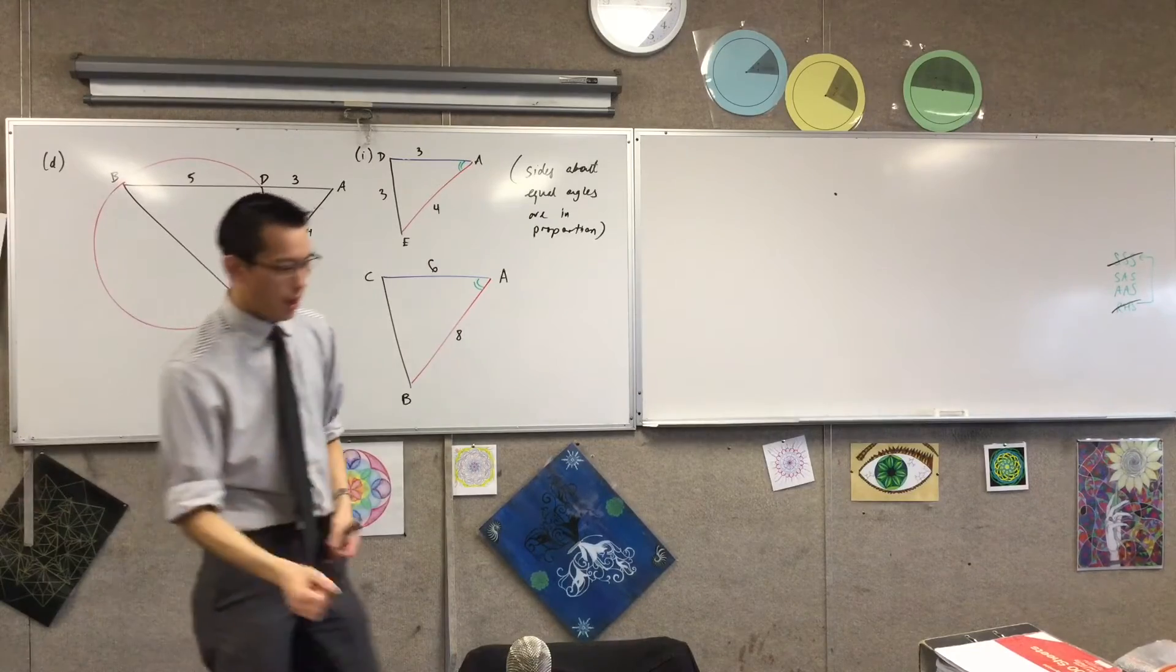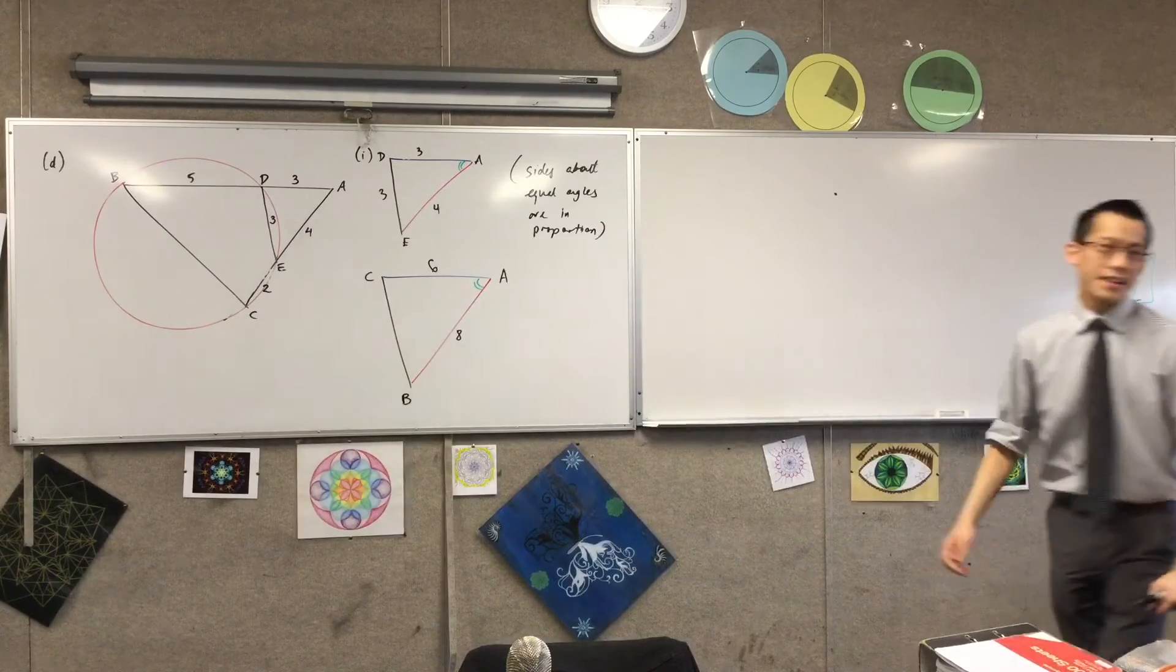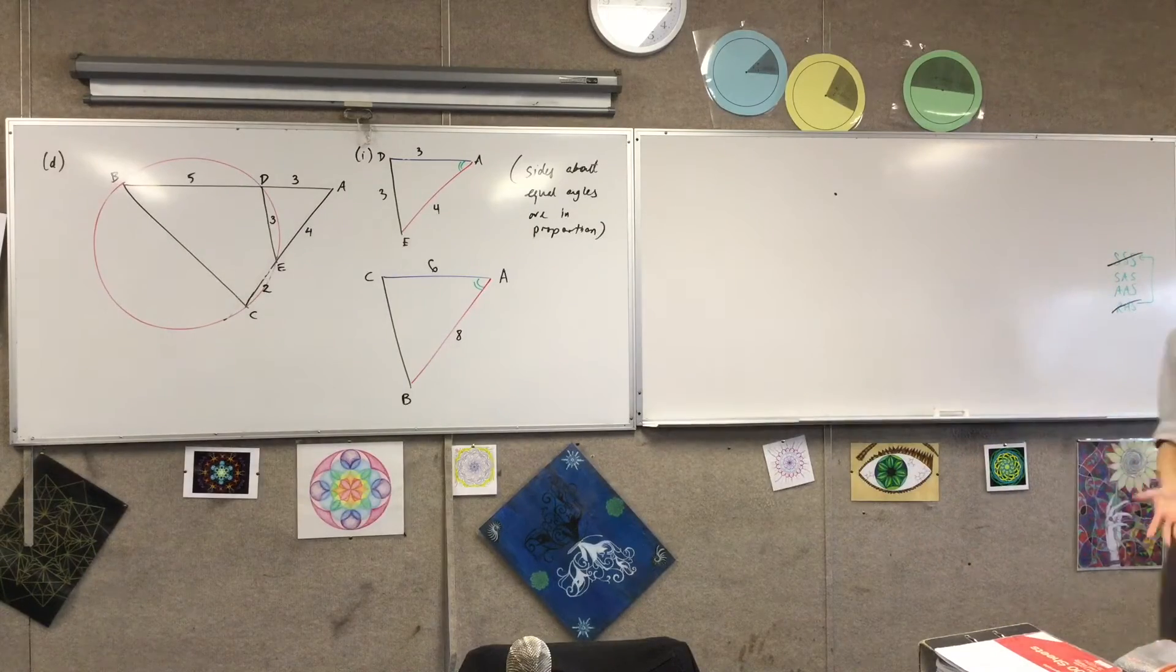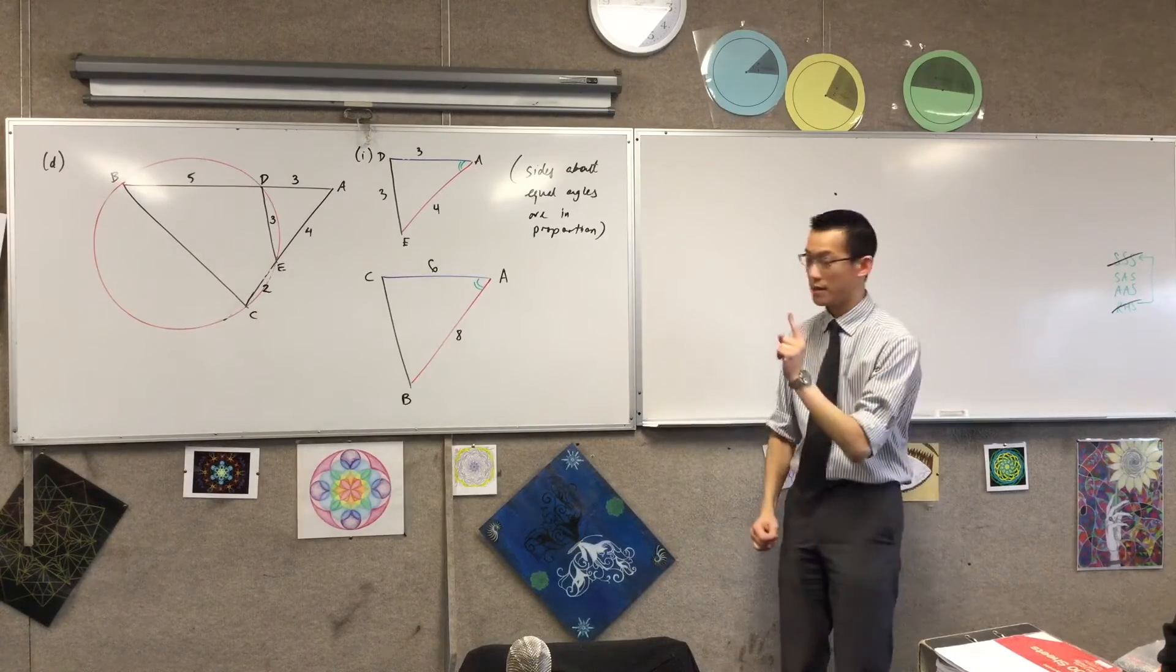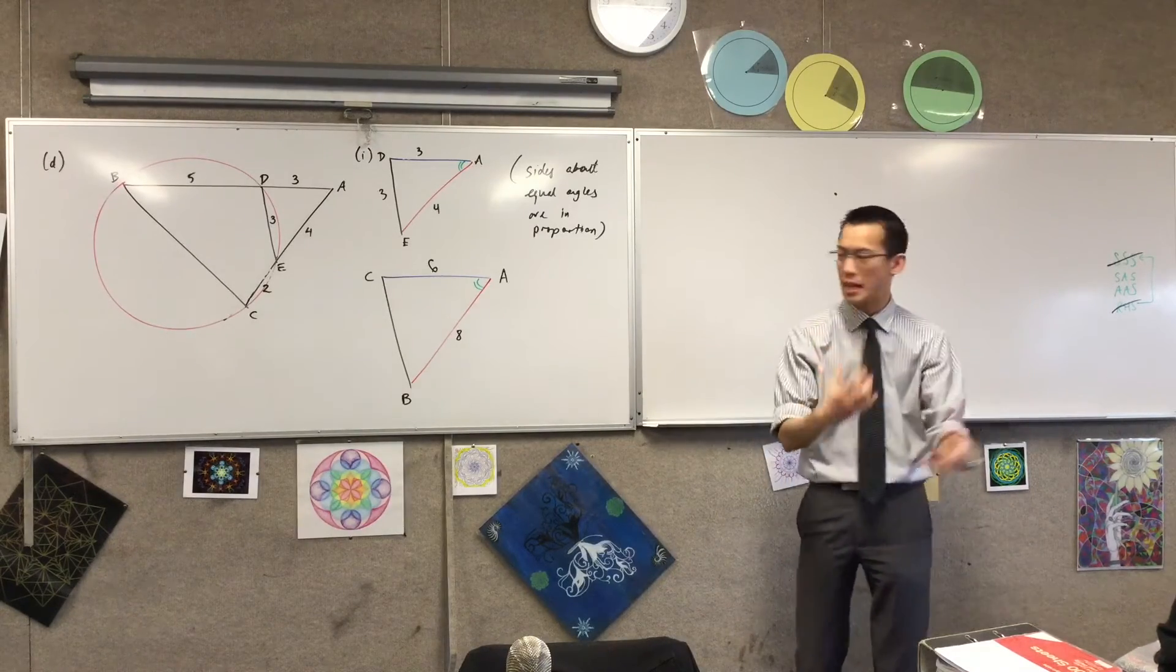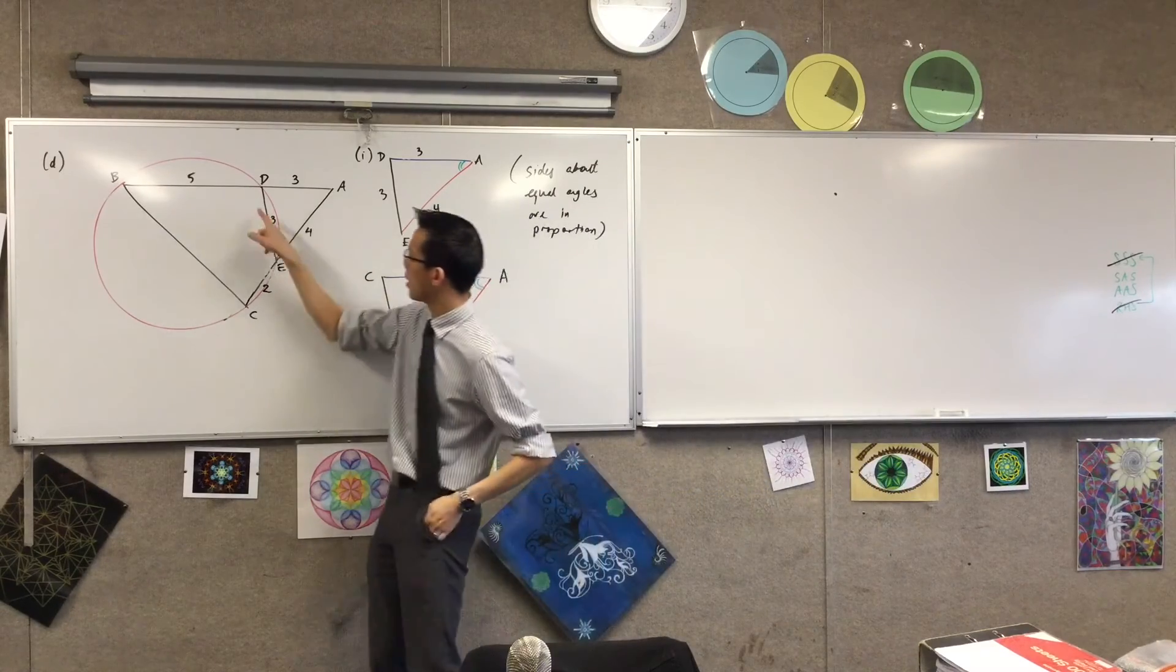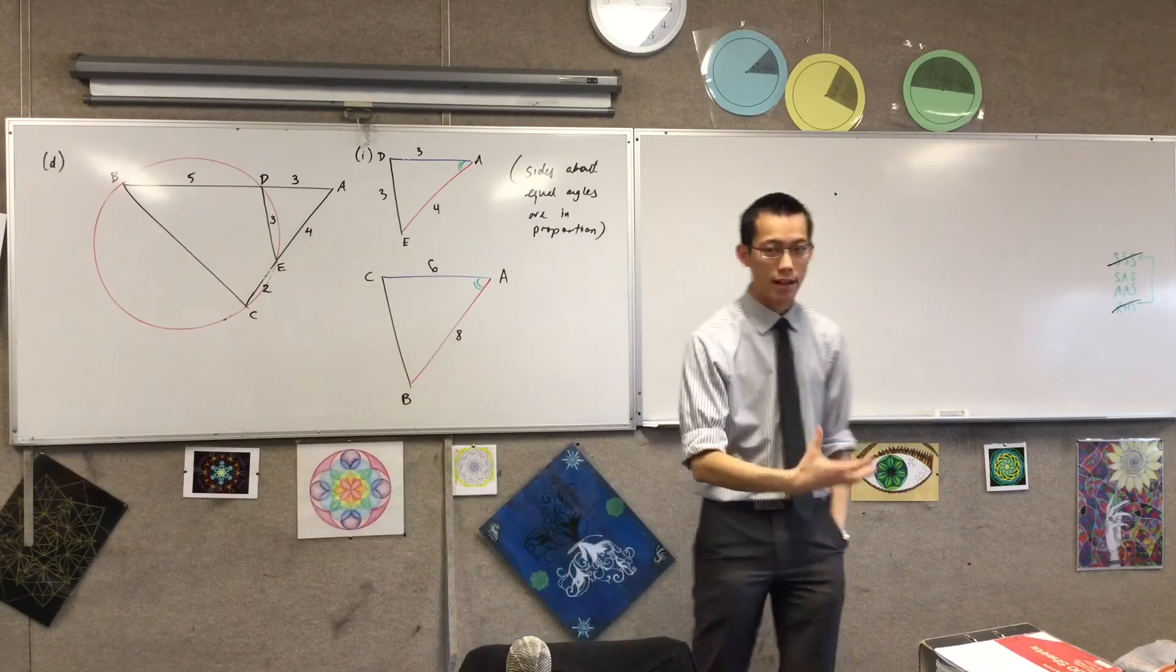Okay, so very good, we've got similarity. Now I'm ready to make this a circle geometry question. Now remember, you just proved that these triangles are similar. So I've got that in the back of my mind, they're probably going to want me to use that in some way. I want to show that this guy over here, BDEC, is cyclic. It's cyclic.